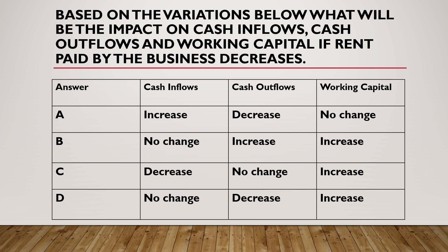The answer is D. Rent paid by the business decreases — rent is clearly a cash outflow, so cash outflows must decrease. Cash inflows have nothing to do with that, so therefore no change. And working capital is likely to improve if the rent paid by the business decreases.